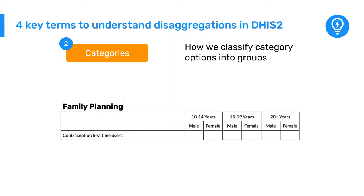Now let's talk about categories. Categories describe how we classify these individual options into groups. In the RMN-CAH dataset, the options male and female make up the sex category.